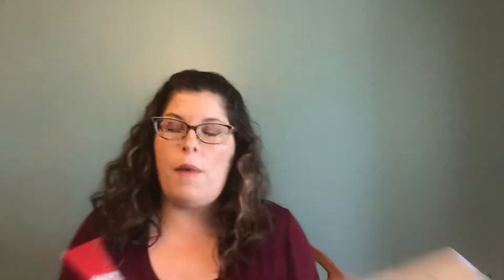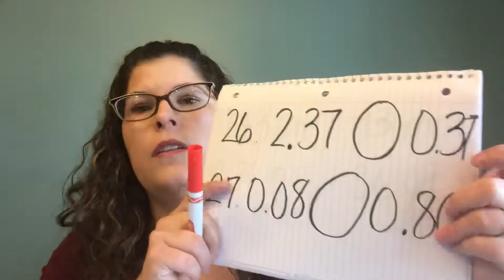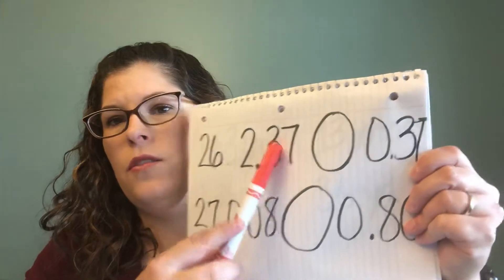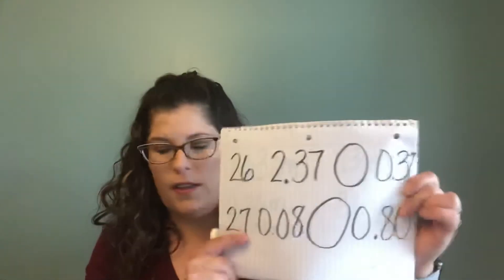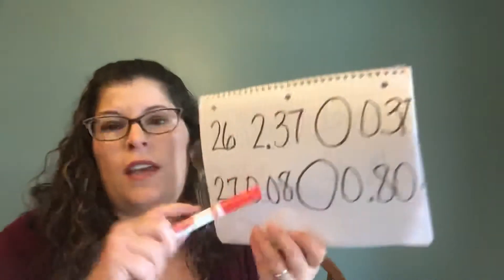Now we're going to look at the last part, which is comparing the decimals in each pair. Use the greater than, less than, or equal symbols. These are decimals. Remember, you're going to start in our tenths spot — so these are tenths, our hundredths. And if you have another one, it's the thousandths, which we do not have here. So it's just tenths and hundredths.